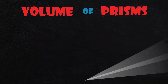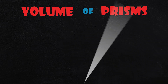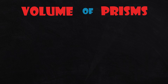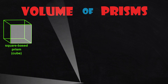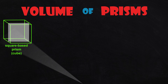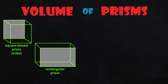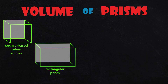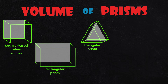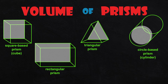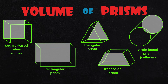Now let's learn what a prism is. A prism is a three-dimensional solid where both ends have the same shape of the same size. This cube or square-based prism has the same square shape at both ends. This rectangular prism has the same rectangle shape at both ends. The triangular prism has the same triangle shape at both ends. This cylinder or circle-based prism has the same circle shape at both ends. This trapezoidal prism has the same sized trapezoid at both ends.